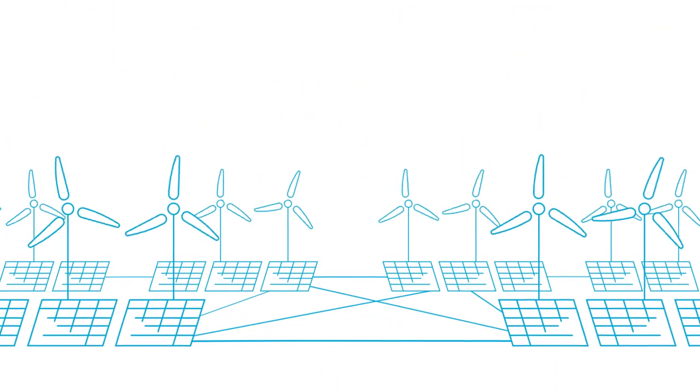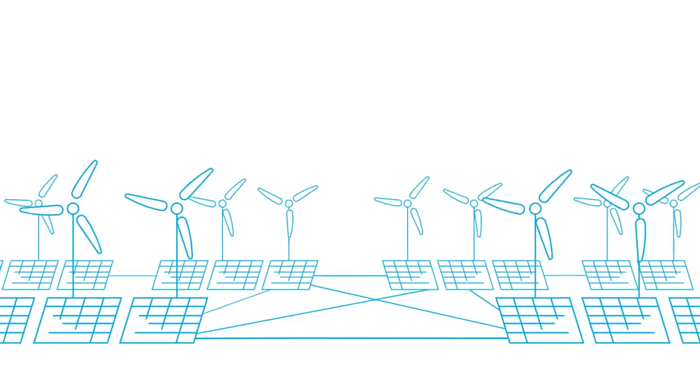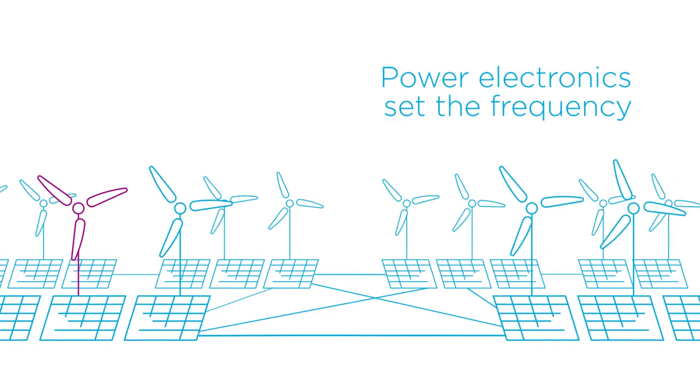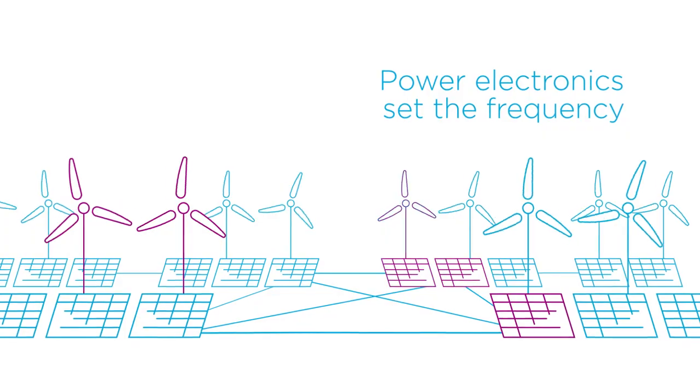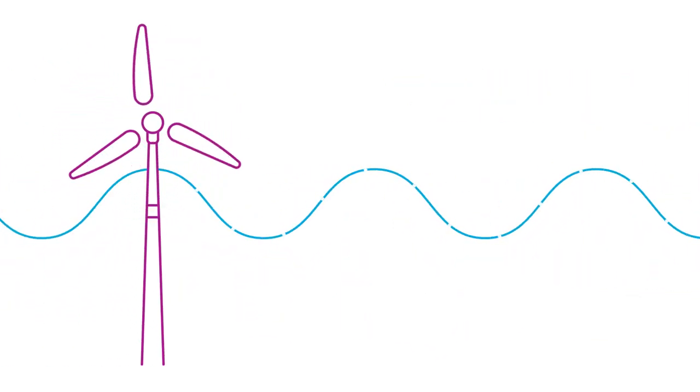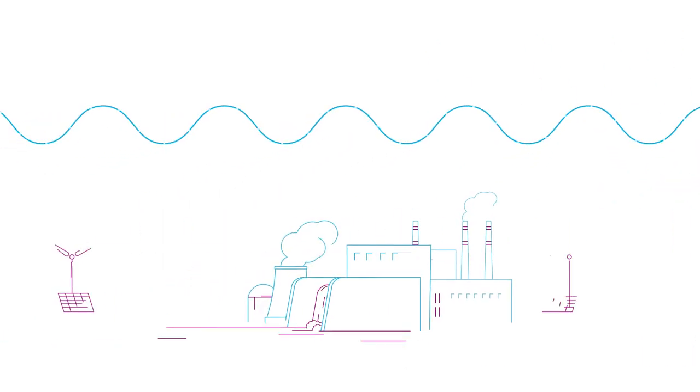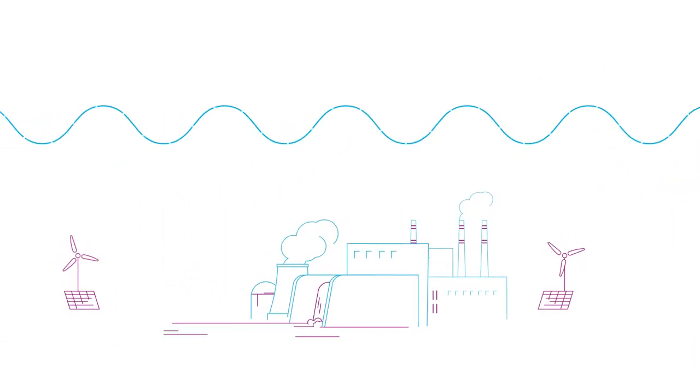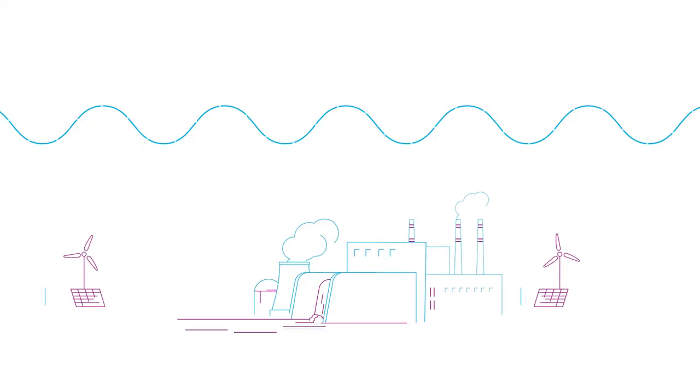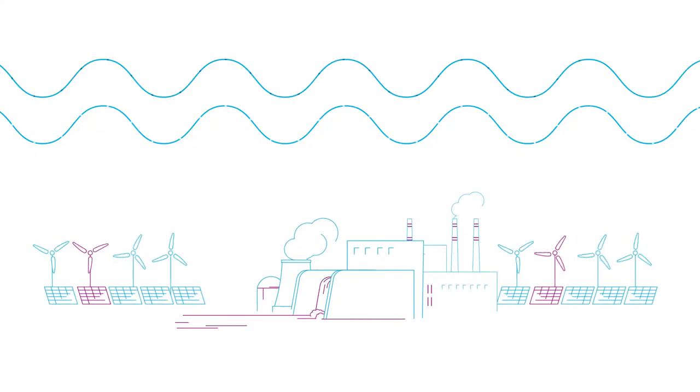The second solution is to use the power electronics capabilities through renewable energy sources or batteries to create frequency and to ensure its stability, even with or without rotating machines in operation. In the same way as present rotors, these equipments would become the conductors, and the other renewable energy sources would just have to follow the scores.